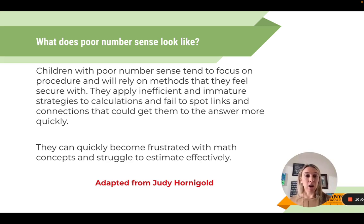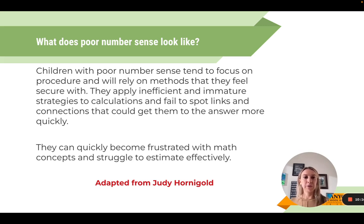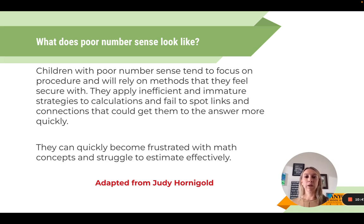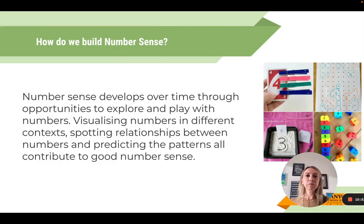I had a fifth grade student who was fairly confident in math, but when he divided he always drew a picture and circled the groups — he didn't have the skills to think outside of the picture. He presented well and scored relatively high on assessments, but he couldn't see connections or find a more efficient way. He learned one way and that was it. Students with poor number sense can also quickly become frustrated and struggle to estimate effectively. This is adapted from the work of Judy Hornigold.